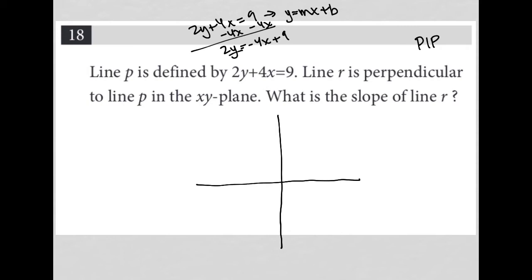And then I divide everything by 2. So I'm left with y equals negative 2x plus 4.5, or 9 halves.